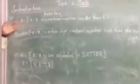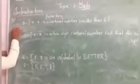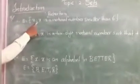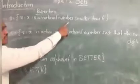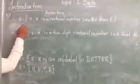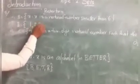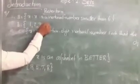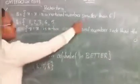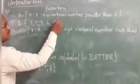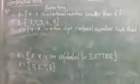The first one: B is the set of x such that x is a natural number less than 6. The natural numbers less than 6 are 1, 2, 3, 4, 5. Should we write 6? No, because it says smaller than 6 — only up to 5 we write.